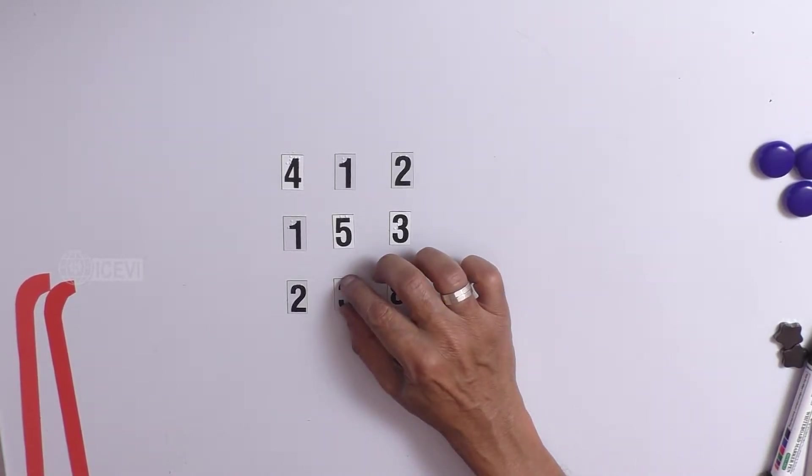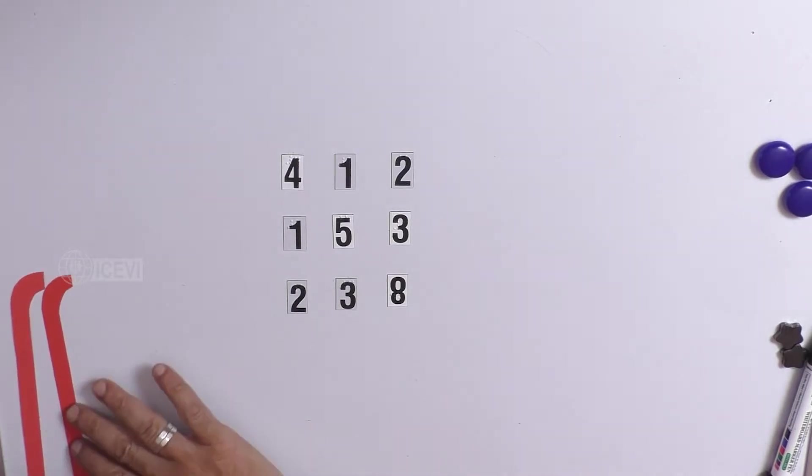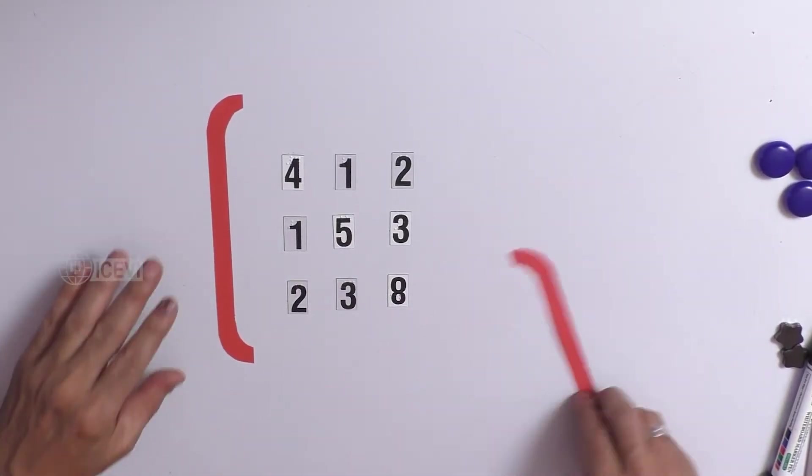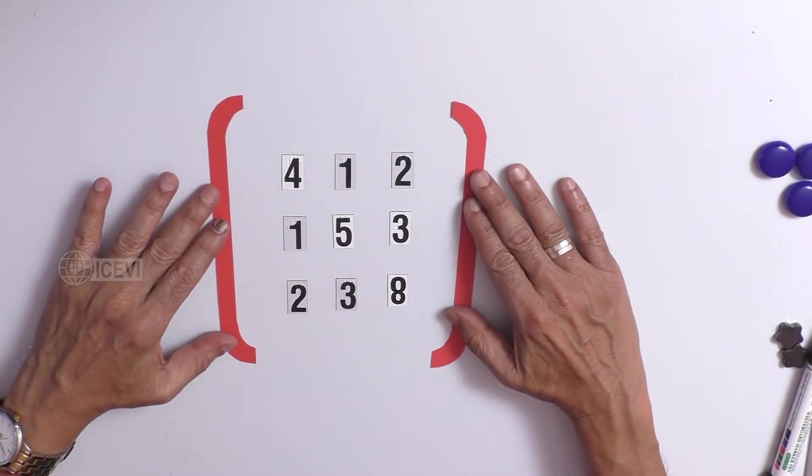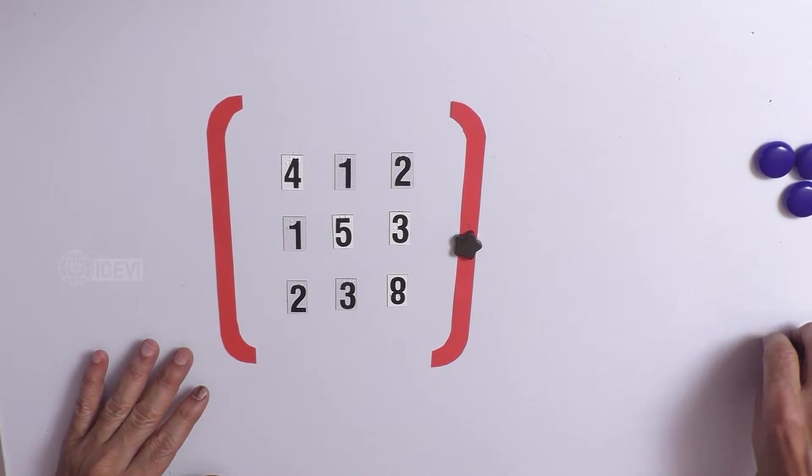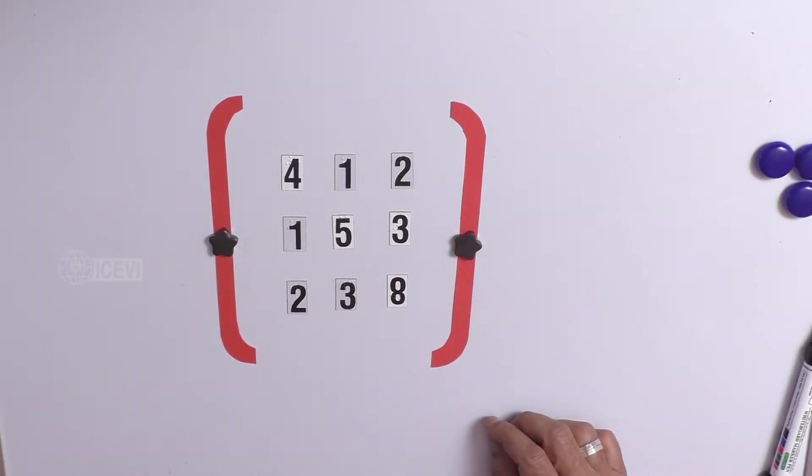Now, how many elements are there in this matrix? So, what we have to do? We have to put an open parenthesis and closed parenthesis on both sides of the matrix. This is how the matrix is indicated.